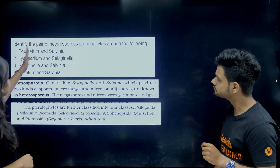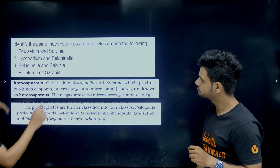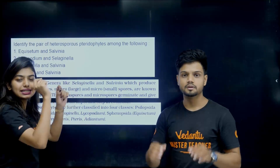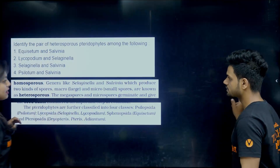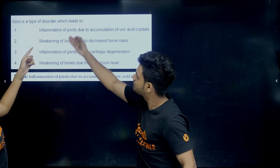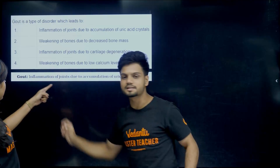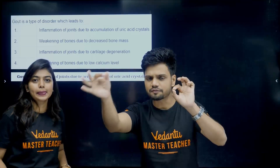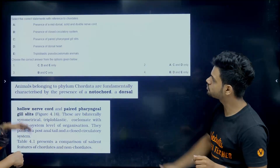If you see 'Identify the pair of heterosporous pteridophytes' — the options include Selaginella and Salvinia. It is not in bold but at least italic. Next: Gout is a type of disorder — again, in this sentence the definition answer is directly in highlighted bold letters.